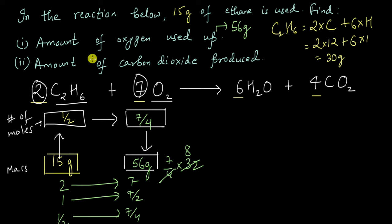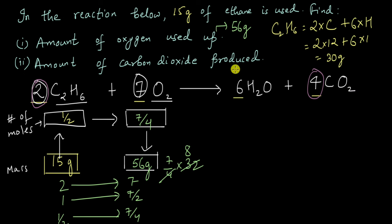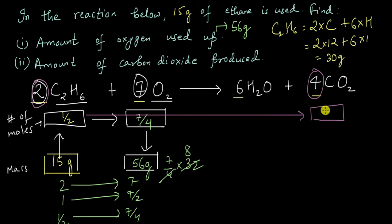Using the same logic, let's find the amount of carbon dioxide produced — pause the video and give it a shot. We already know we have 0.5 moles of ethane. For every two moles of ethane, four moles of carbon dioxide are produced, giving a ratio of 2 is to 4, that is 1 is to 2. So if we use half a mole of ethane, we must have produced half times two — that is one mole of carbon dioxide.